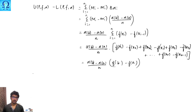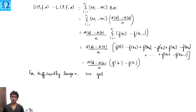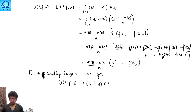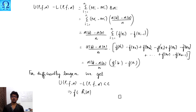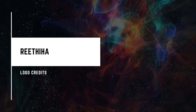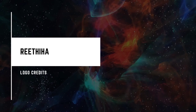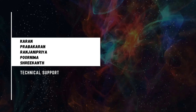We initially chose epsilon as a given small positive quantity. For sufficiently large n, the entire quantity (alpha(b) minus alpha(a)) times (f(b) minus f(a)) divided by n becomes less than epsilon. So U(P, f, alpha) minus L(P, f, alpha) is less than epsilon for sufficiently large n. By the necessary and sufficient condition of Riemann-Stieltjes integrability, f is RS integrable. This completes the proof. Thank you.